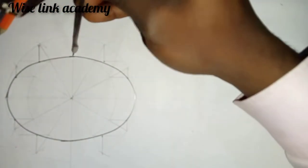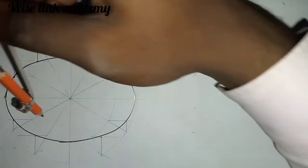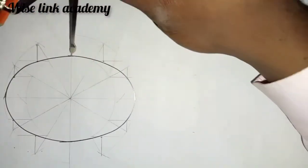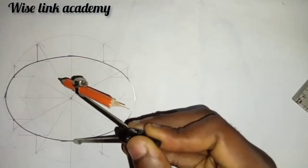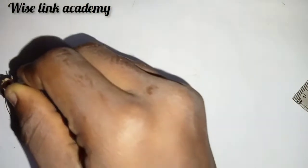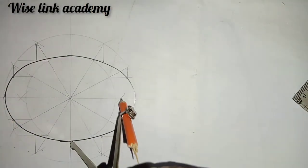You take it up here, come down and strike an arc. Strike an arc this way. Similarly, you come down with the same radius to this point here, strike an arc down here.